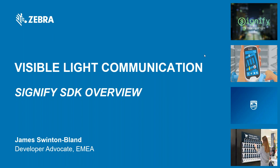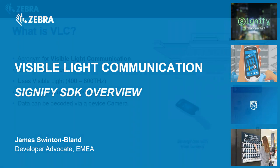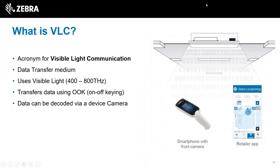Thanks, Ian. Just going to go through the SDK from a developer's point of view. To reiterate what Ian said, a brief overview of what VLC is: it's an acronym for visible light communication. It's essentially a medium for transferring data, but it uses visible light as the medium to transfer the data, within a range of 400 to 800 terahertz. It transfers that using the on-off keying that Ian mentioned, and then that light is decoded on the device.